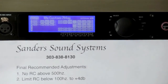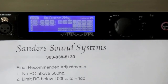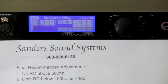As explained in the manual, the ultralinear Sanders hybrid electrostatic speakers should not utilize room correction above 500 cycles. Our final recommended adjustments require us to zero out any room correction adjustments above 500 cycles. Additionally, we will minimize any room correction gain below 100 cycles to no greater than 4 dB.